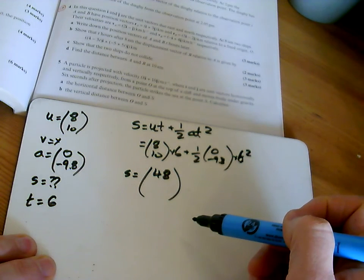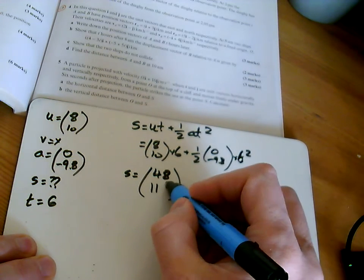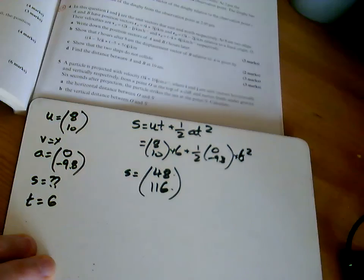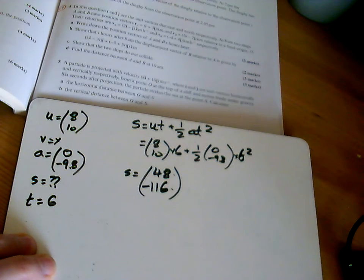...squared divided by 2. So what's that? That's going to be 116, isn't it? And so there's the answer. The horizontal distance is 48 and the vertical distance is minus—sorry, minus 116.